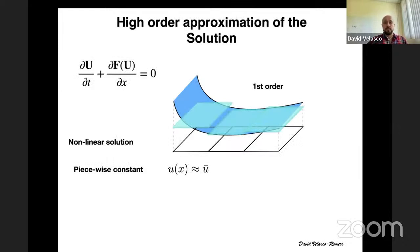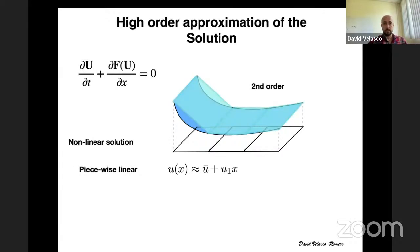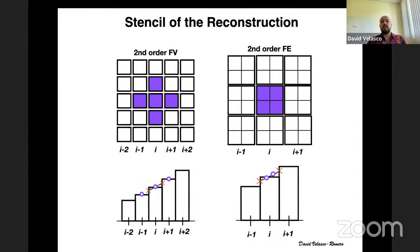This first-order approximation introduces numerical diffusion. To reduce it, we can go to higher-order: a piecewise linear approximation gives second order, or a piecewise parabolic approximation gives third order, adding more terms to better represent the solution.